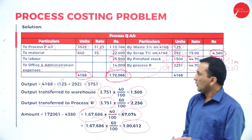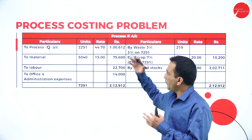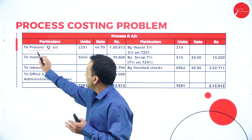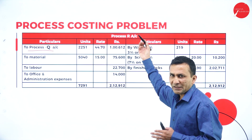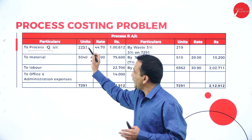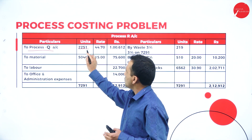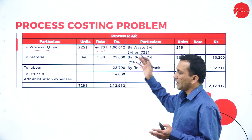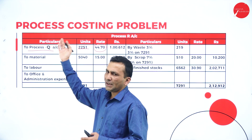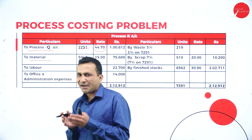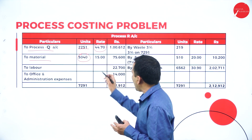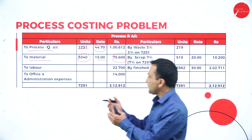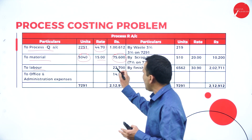Now for Process R: 2,251 units are transferred from Process Q at ₹44.70 per ton, same as the credit side of Process Q. Additionally, 5,040 tons of material are added at ₹15 per ton: 5,040 × ₹15 = ₹75,600. Labour expense for Process R is ₹22,700, and office and administration expense is ₹14,000 (one-third of ₹42,000).